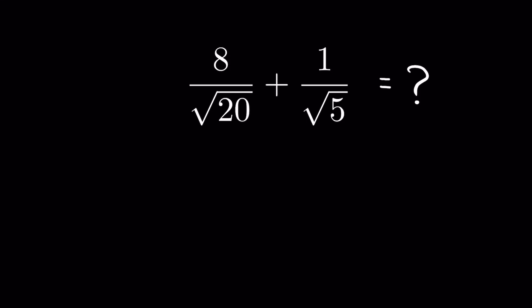8 upon square root of 20 plus 1 upon square root of 5. This is an addition of fractions where we have radicals. How to solve it? If you want to solve this question, pause the video and let me know the answer in the comment section.